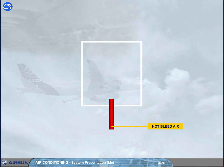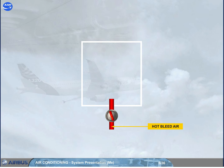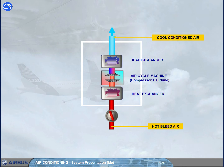Hot bleed air enters the pack via a pack flow control valve. Its function is to adjust the flow rate through the pack. The air then passes through several stages within the pack — heat exchangers and an air cycle machine — so that it is cooled to provide a conditioned air output. In fact, sub-zero temperatures can be achieved.